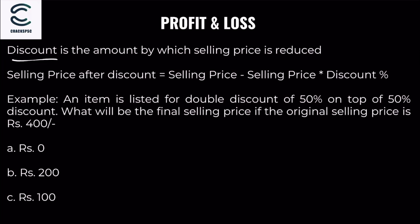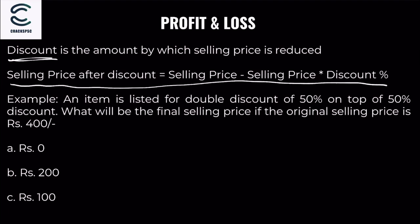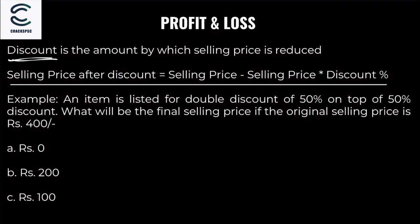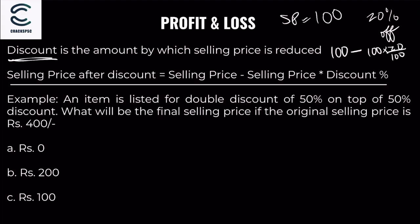Now let's go to discount. Discount is the amount by which selling price is reduced. The price after discount equals selling price minus selling price into discount percentage. For example, if selling price is 100 rupees and discount is 20%, the new selling price is 100 minus 20, which equals 80.